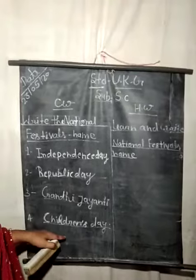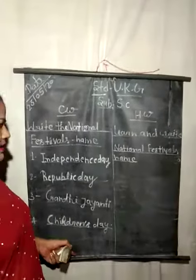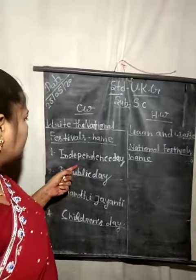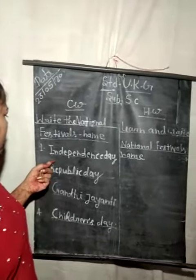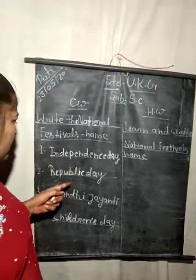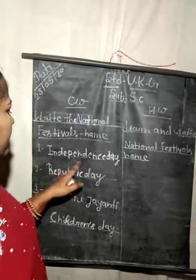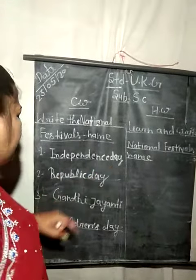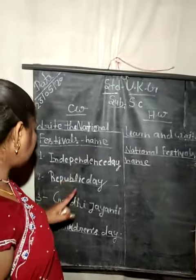Here are the National Festival names. This is the National Festival name. Independence Day: I, N, D, E, P, E, N, D, E, N, C, E, D, A, Y. In better terms.